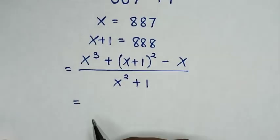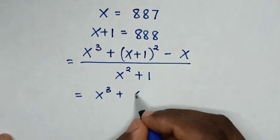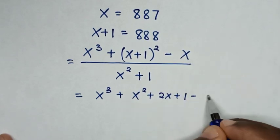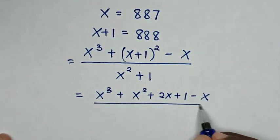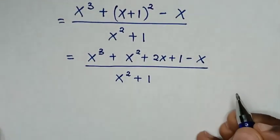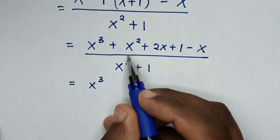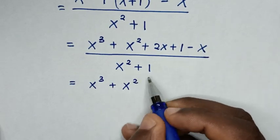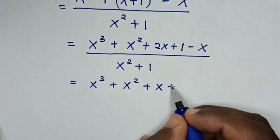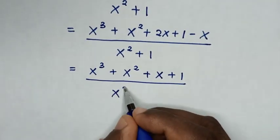Then it will be equal to x cubed, then plus (x+1) squared — which expands to x squared plus 2x plus 1 — then minus x, all over x squared plus 1. Combining like terms: x cubed plus x squared, then 2x minus x is x, so plus x, then plus 1, over x squared plus 1.